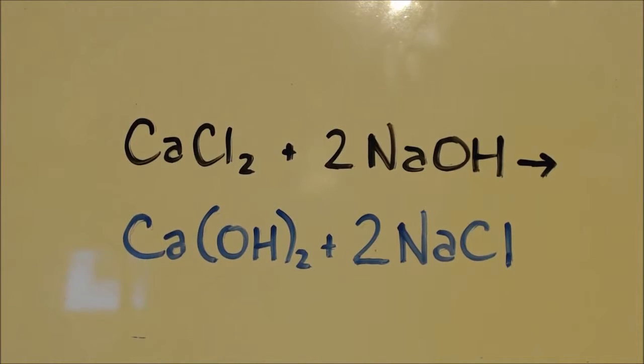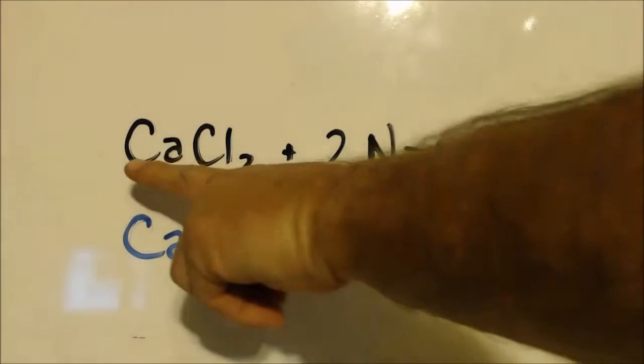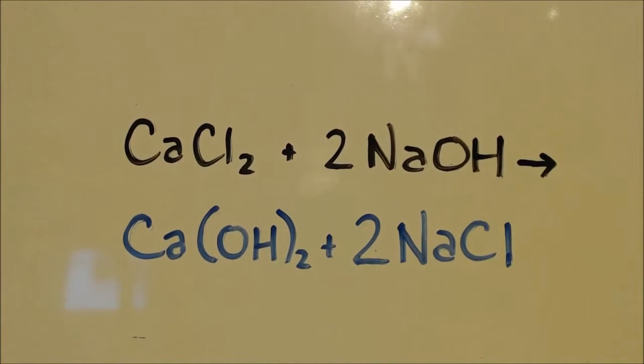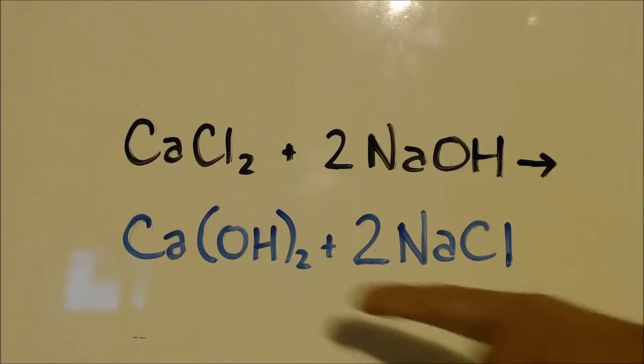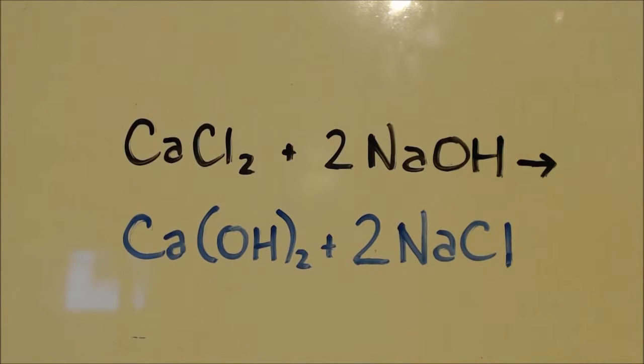This is John Black, superchemist, here to show you how to make some calcium hydroxide. Here's the equation. I'm going to use some calcium chloride and some sodium hydroxide. You can see I need twice as much sodium hydroxide than I do calcium chloride, so I'll have to keep that in mind. It will make calcium hydroxide and some table salt.